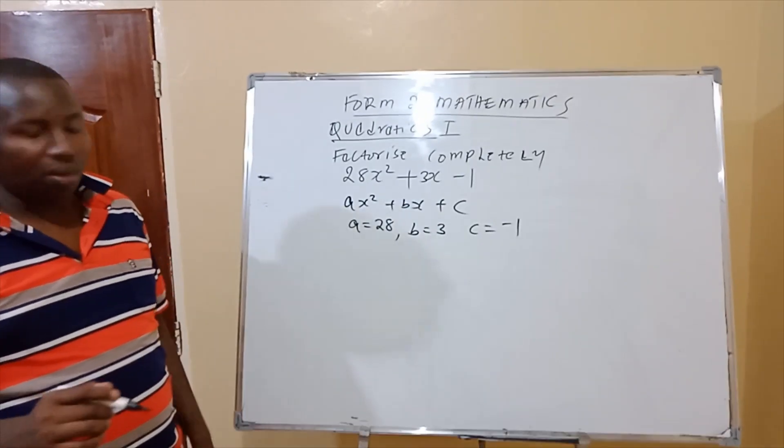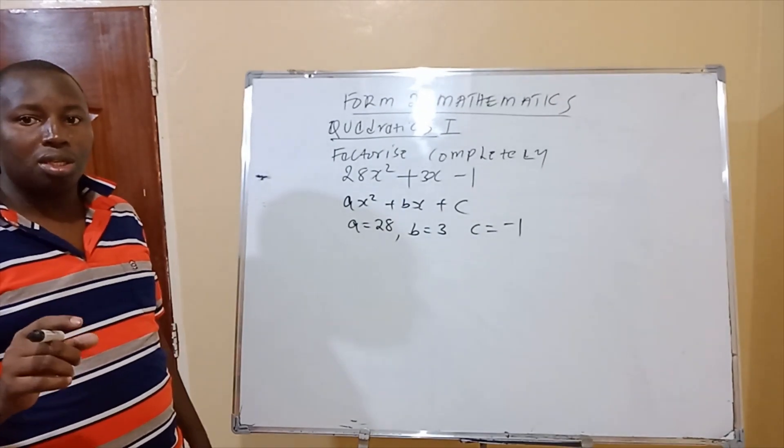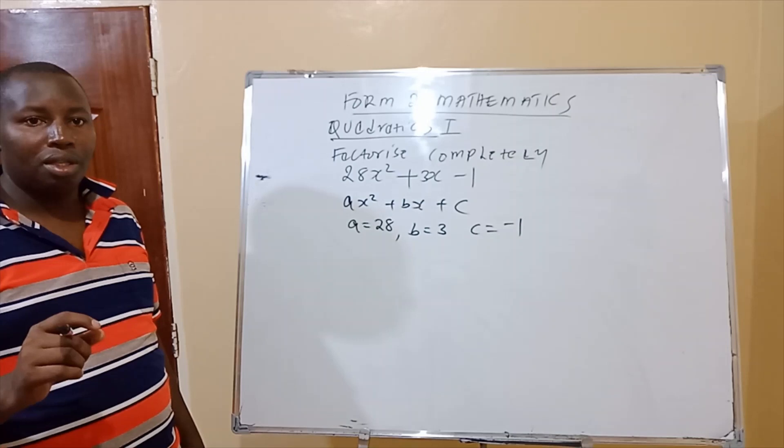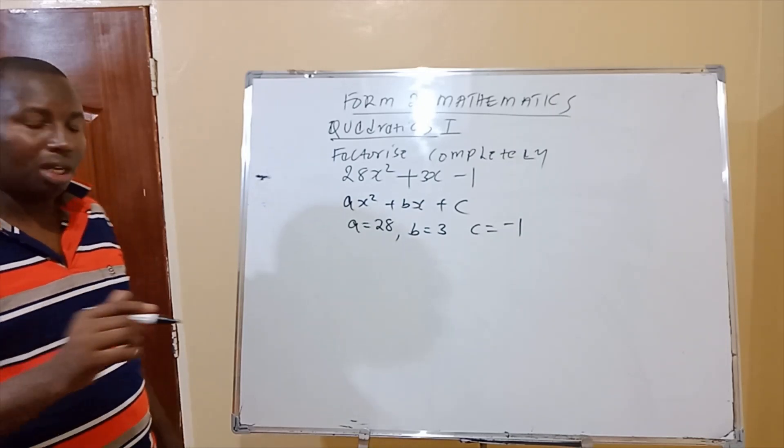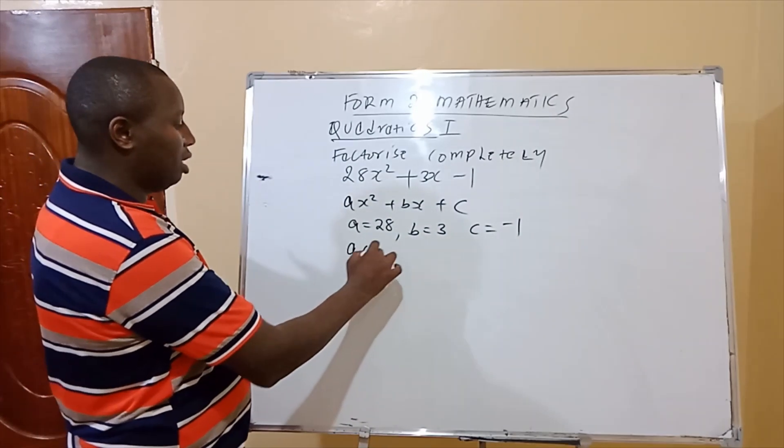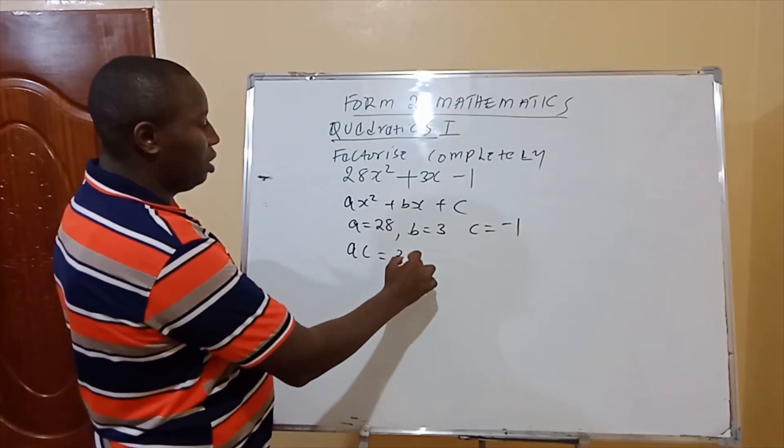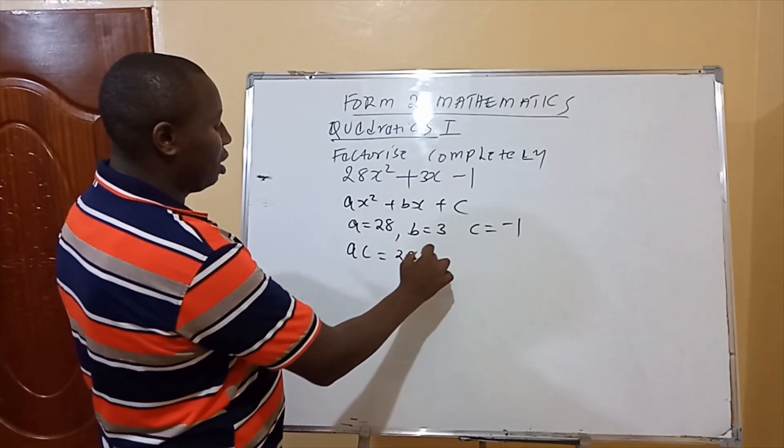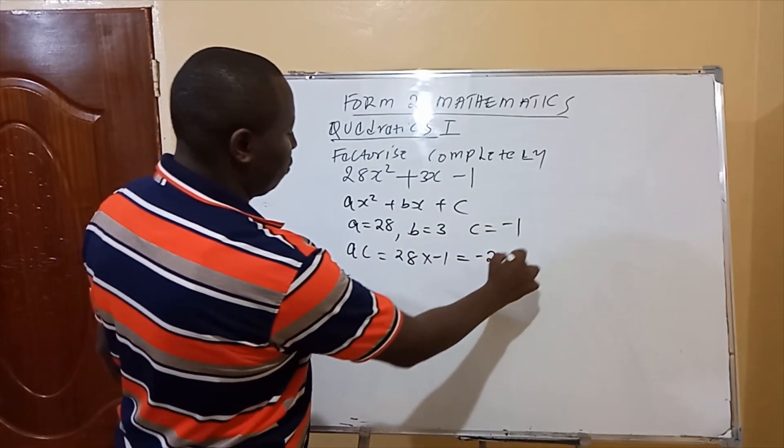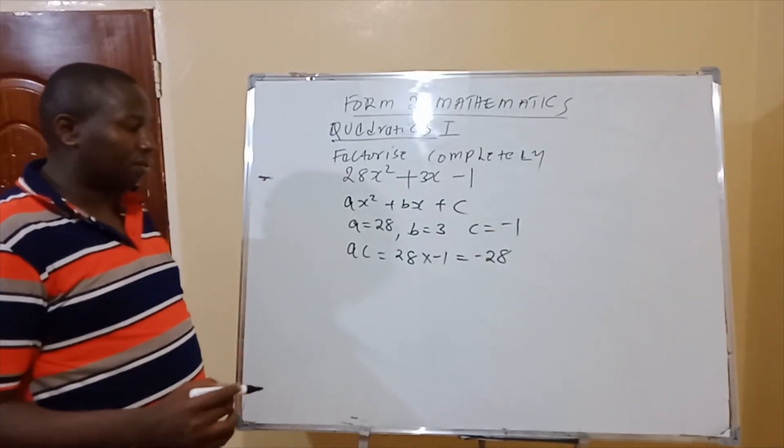Then for us to factorize this, once you get that, you are supposed to use sum and product method. You are supposed to use sum and product method, and say ac, the product of ac, which is 28 times negative 1, you get negative 28.